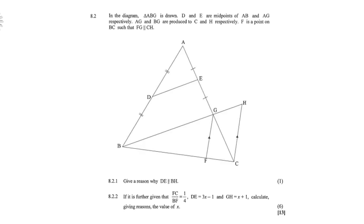8.2. In the diagram, triangle ABG is drawn. D and E are midpoints of AB and AG, respectively. AG and BG are produced to C and H, respectively. F is a point on BC, such that FG is parallel to CH. 8.2.1. Give a reason why DE is parallel to BH. 8.2.2. If it's further given that FC over BF equals a quarter, DE is 3X minus 1, and GH is X plus 1, calculate, giving reasons, the value of X.